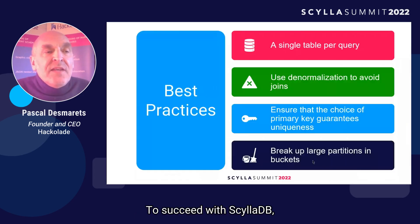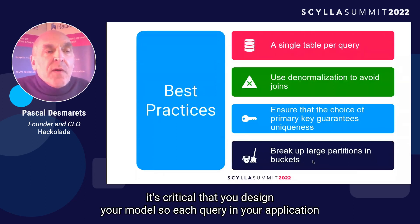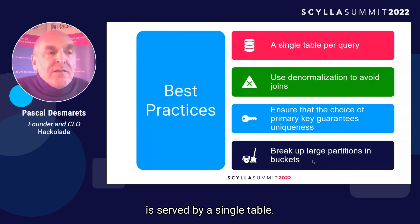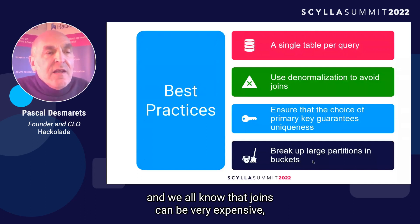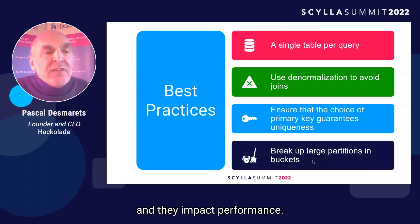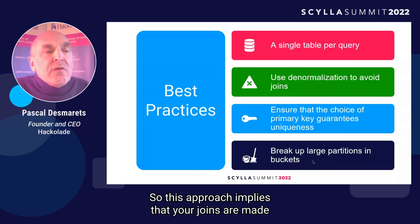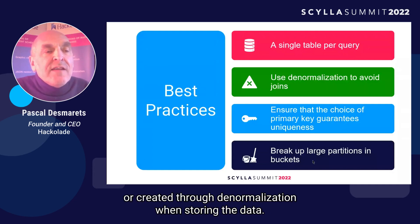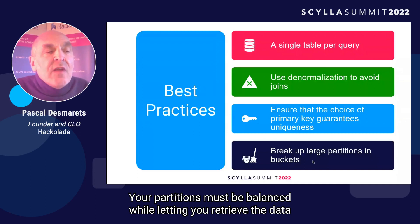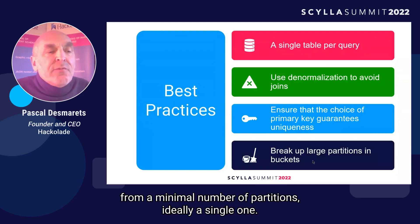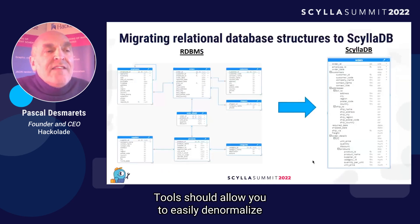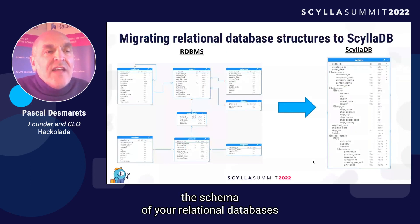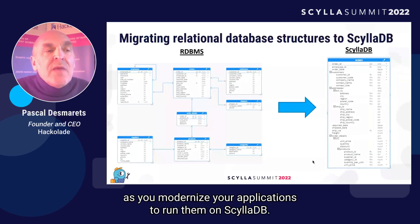To succeed with ScyllaDB, it's critical that you design your model so each query in your application is served by a single table. That way, you don't have to create joins when reading the data. We all know that joins can be very expensive and they impact performance. This approach implies that your joins are made through denormalization when storing the data. Your partitions must be balanced while letting you retrieve the data from a minimal number of partitions, ideally a single one. Tools should allow you to easily denormalize the schema of your relational databases as you modernize your applications to run them on ScyllaDB.